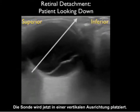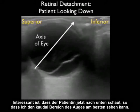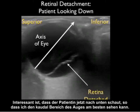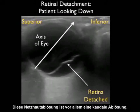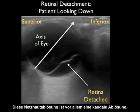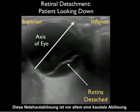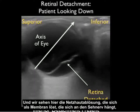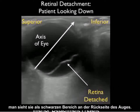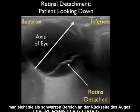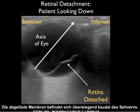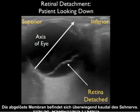Here we place the probe in a vertical, up-and-down orientation. With the patient looking down, we can best see the inferior aspect of the eye, and we know this retinal detachment is mainly an inferior detachment. We can see the detached retina coming off as a membrane that tethers at the optic nerve — that black area coming into the back of the eye — and the detached membrane is predominantly located inferior to the optic nerve.